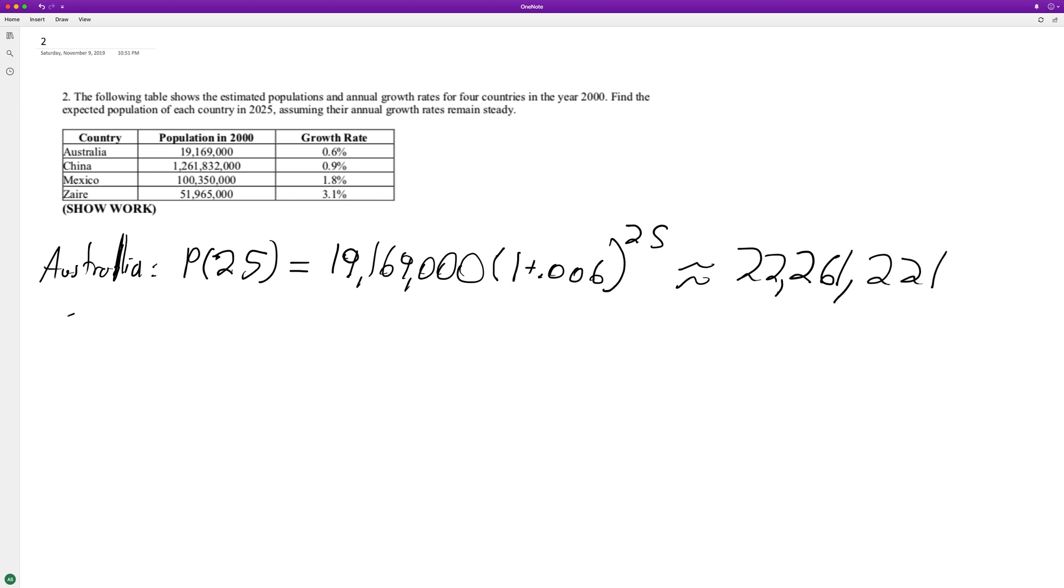So exact same thing for China, Mexico, and Zaire. Population in 25 years, we get 1 billion 261 million 832,000 times 1 plus 0.009 raised to 25. We get approximately 1 billion 578 million 631,240 people.